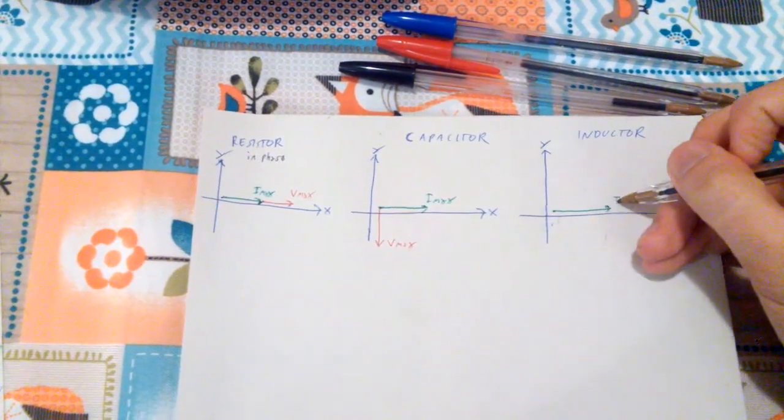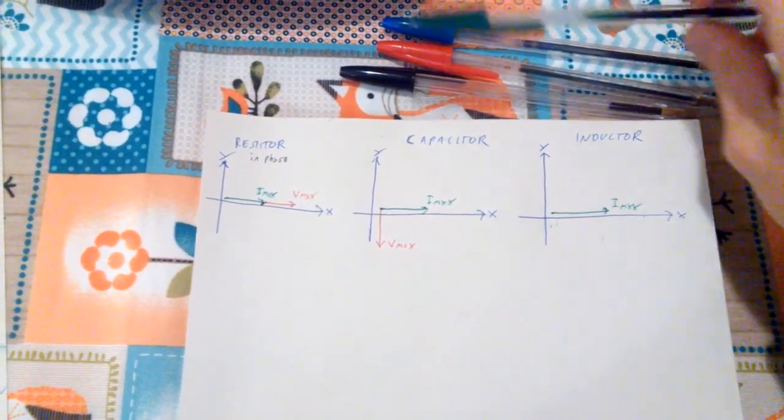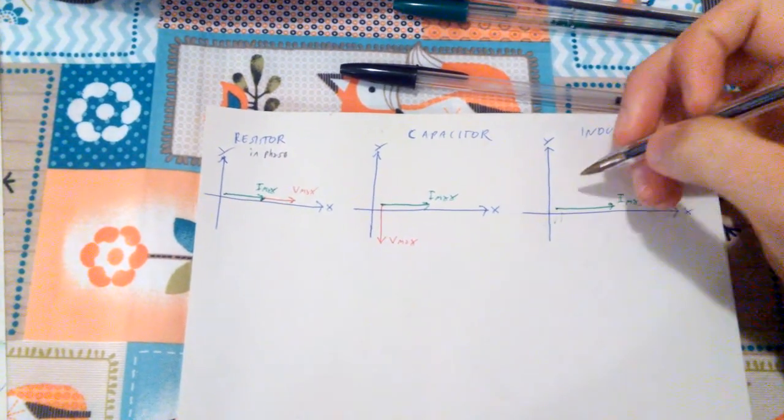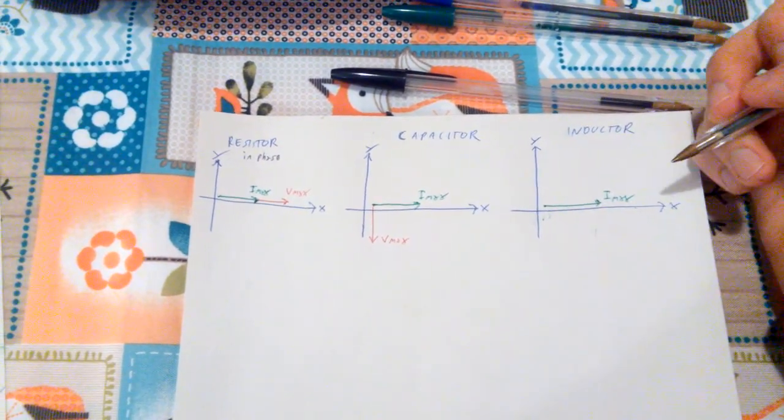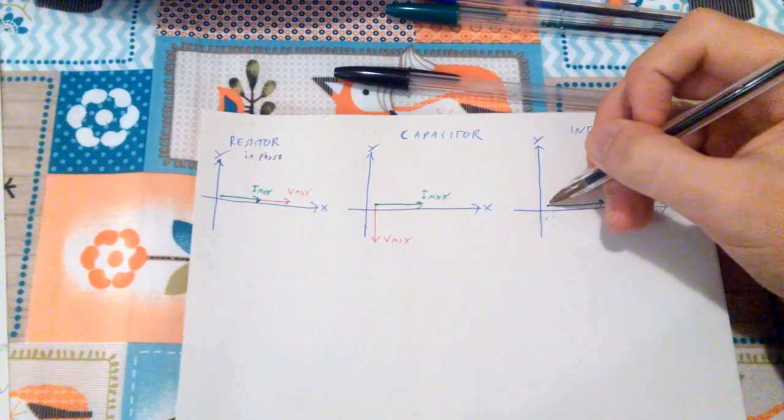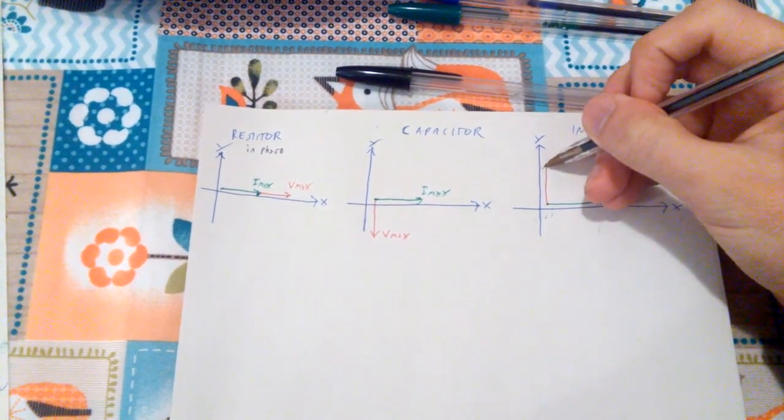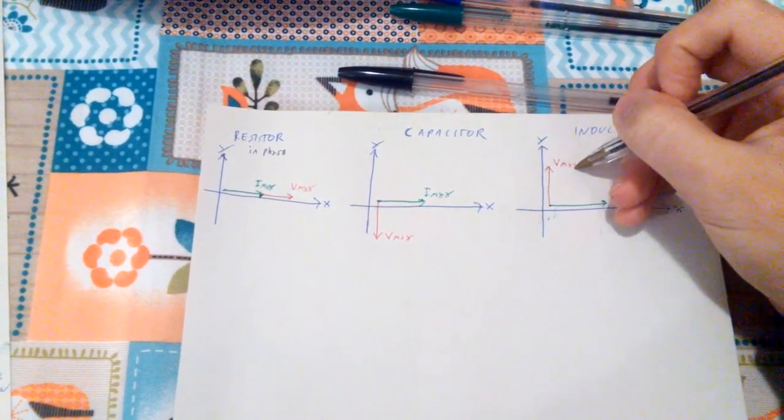Anyway, so let's suppose this is my Imax, then my Vmax in this case is still going to be a 90 degree shift, but it's going to point up. So this one will be my Vmax.